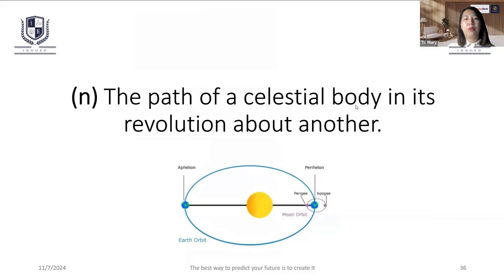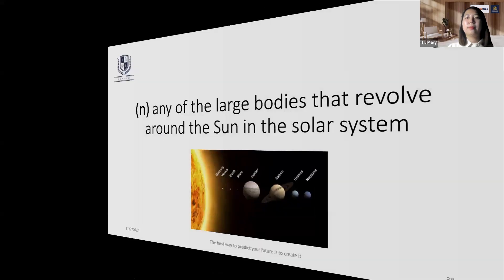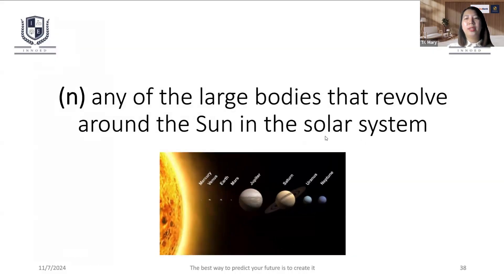The celestial bodies are recognized at the University of the United States. Planets. The solar system is in large coordinates. Planets. So the solar system is in large coordinates.